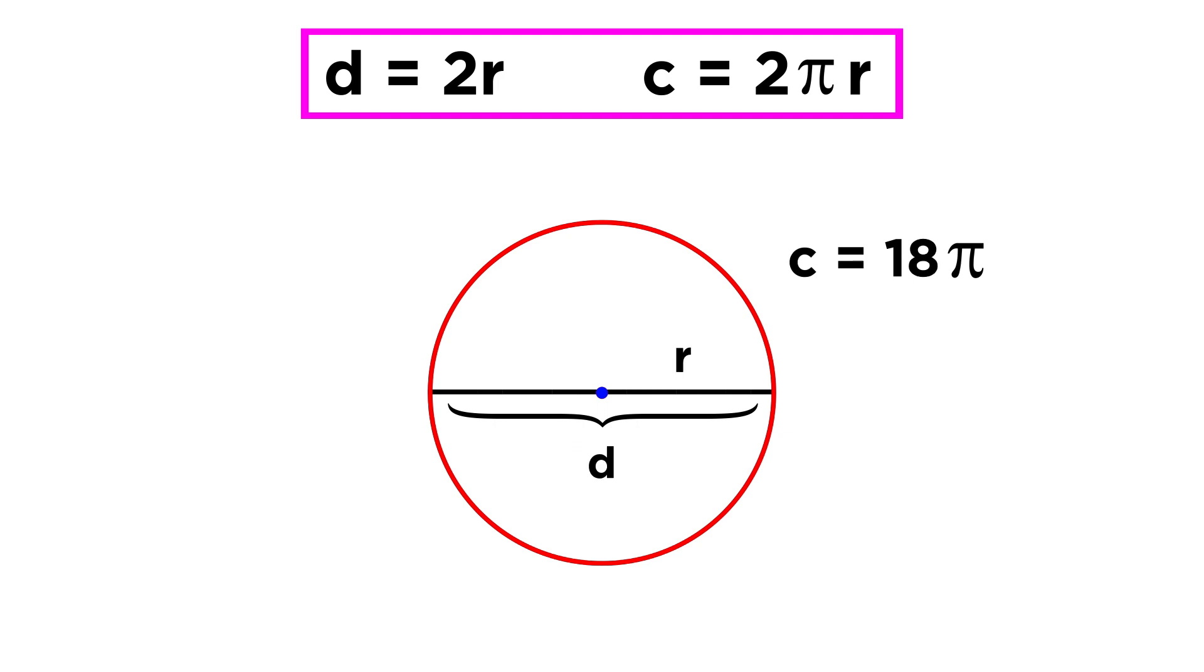Going backwards, if we have a circumference of 18π, we can find a diameter of eighteen, and a radius of nine.